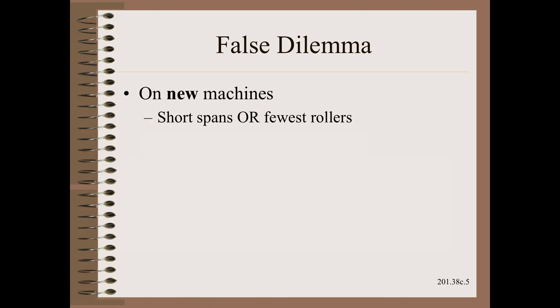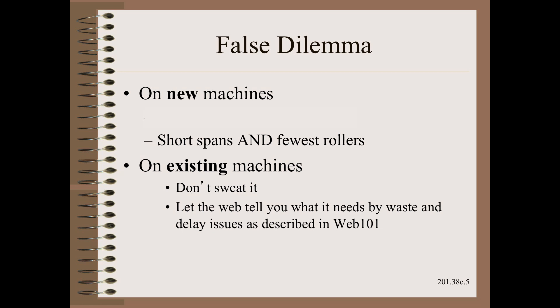Now after detailing concerns that will only affect a few of you, I don't want you to succumb to the false dilemma of having to choose either short spans or fewest rollers. On a new machine, we want both short spans and fewest rollers. On existing machines, don't sweat it. Let the web tell you what it needs by looking to see what waste and delay issues are span sensitive, as we described in Web 101.